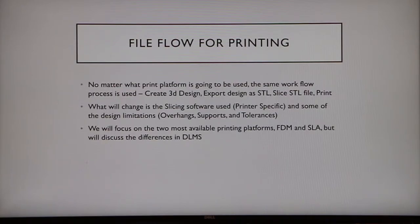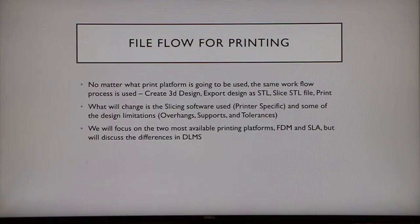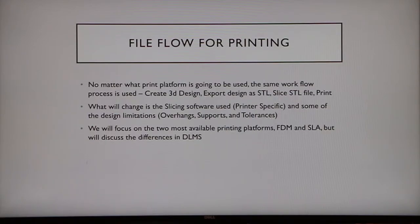What does change is the slicing software. That's printer-specific. For our SLA printers we're going to be using Chai 2 Box, and for our FDM printers we're going to be using Cura from Ultimaker. When we work on the metal printer, we'll be using a proprietary software called Magix. Today we're going to focus on the two most commonly available to you here at UDC — that's our FDM and SLA printers.